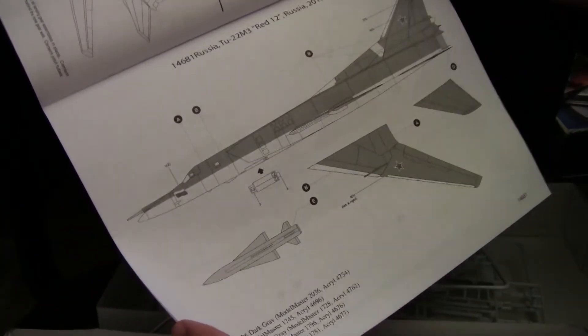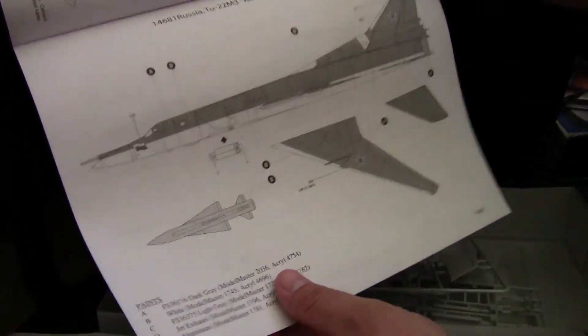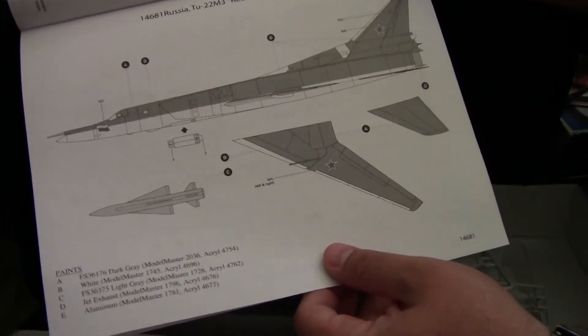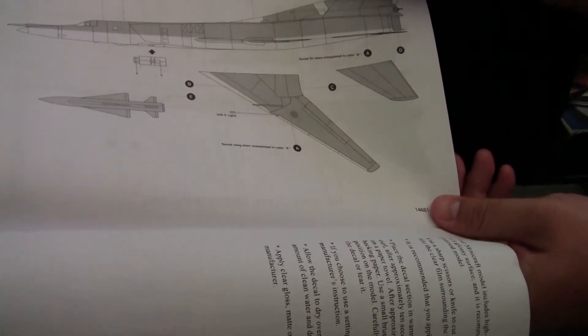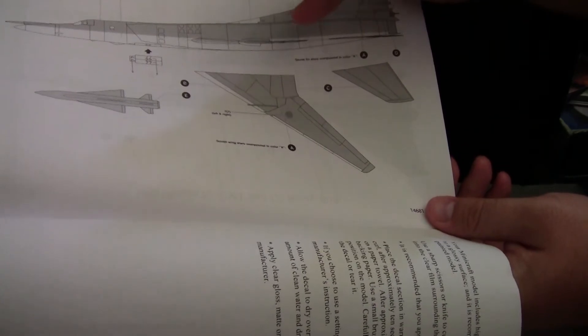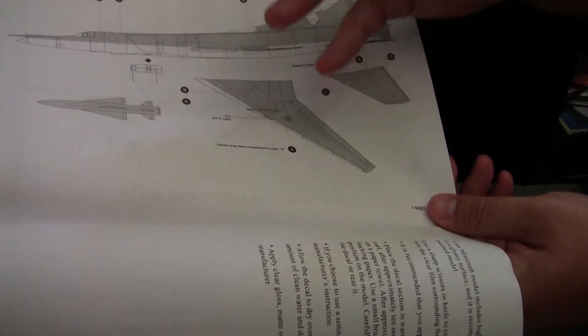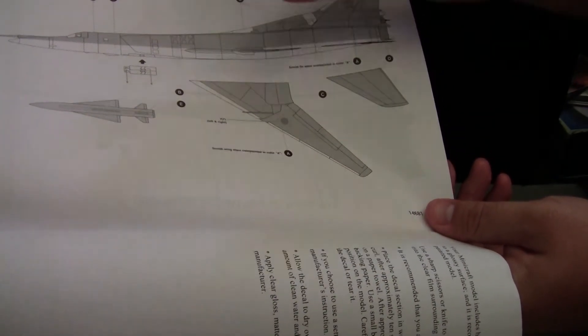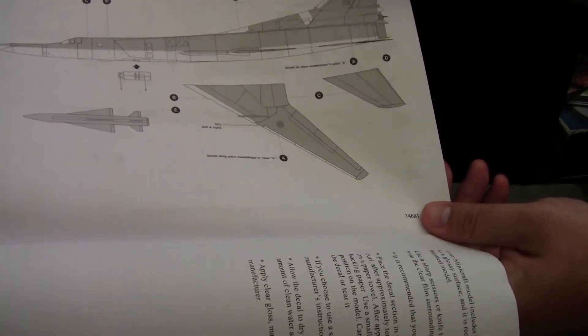Now, you're given, as I said, marking options for two kit aircraft, a Russian one and a Ukrainian one. Now, on the Ukrainian one, they were a little vague on the decal. It almost seems like it wants you to decal over one the other. It's a little confusing how they worded it.